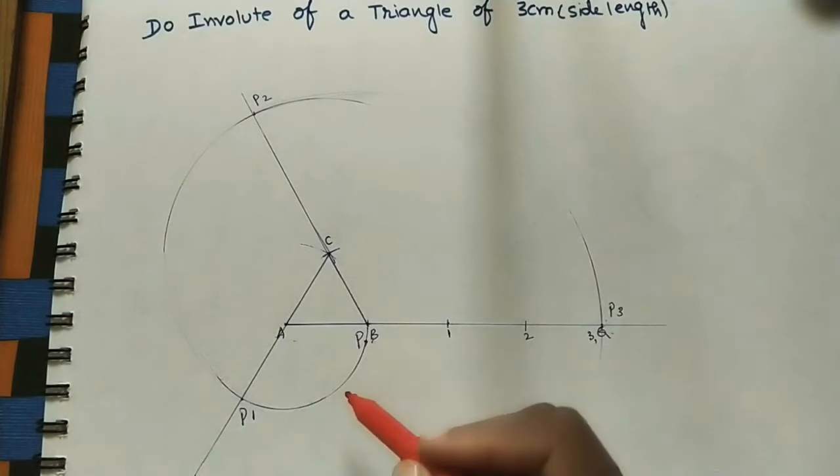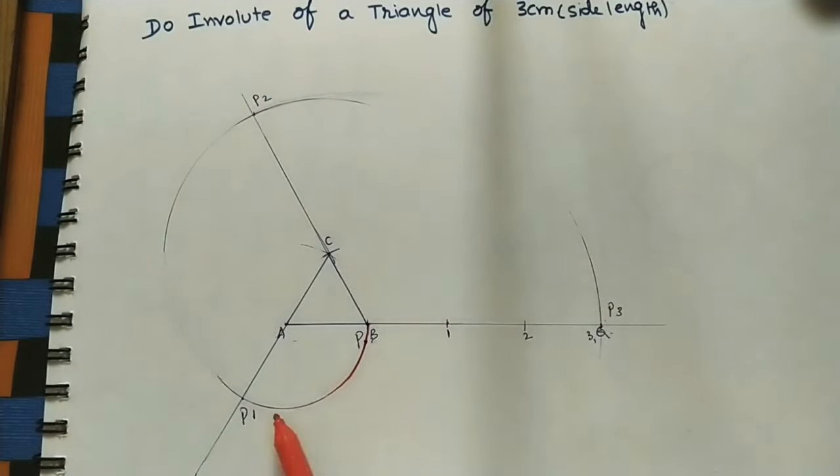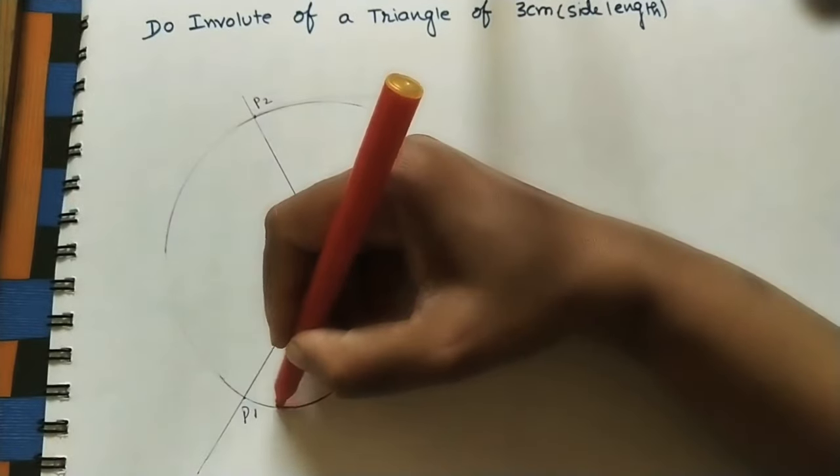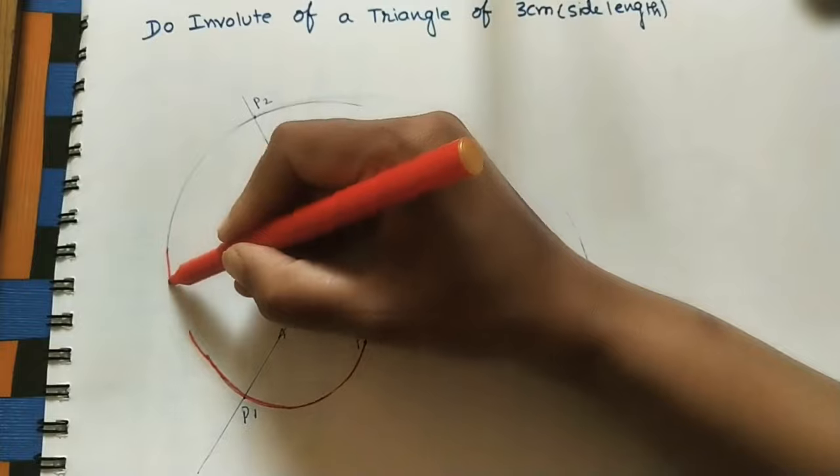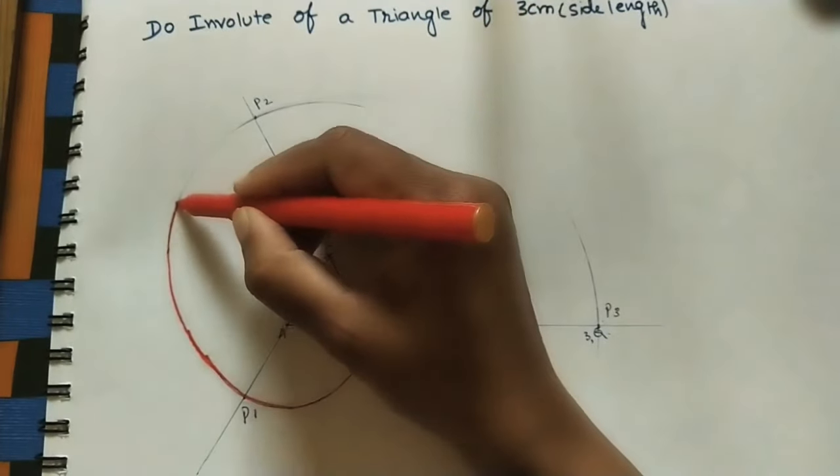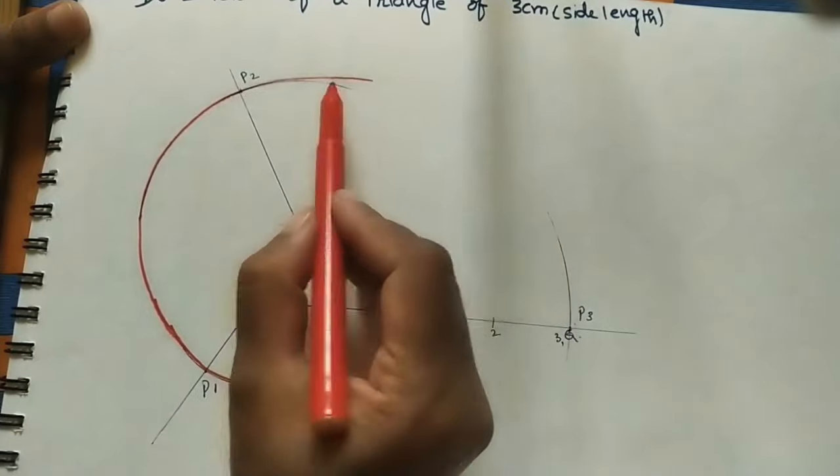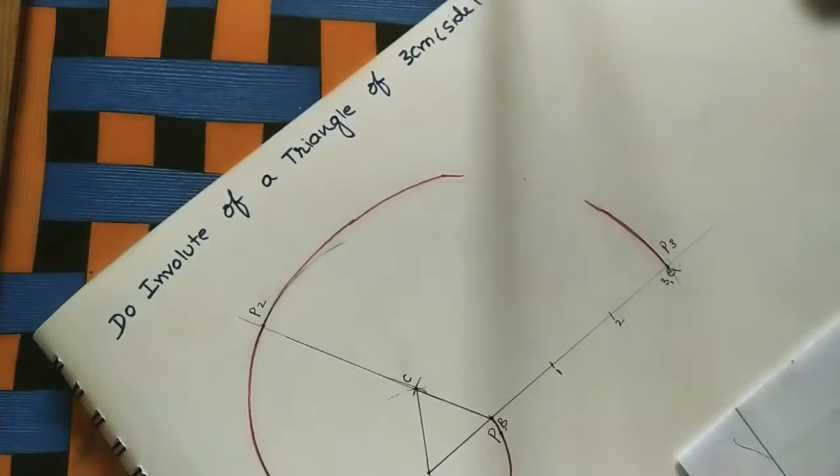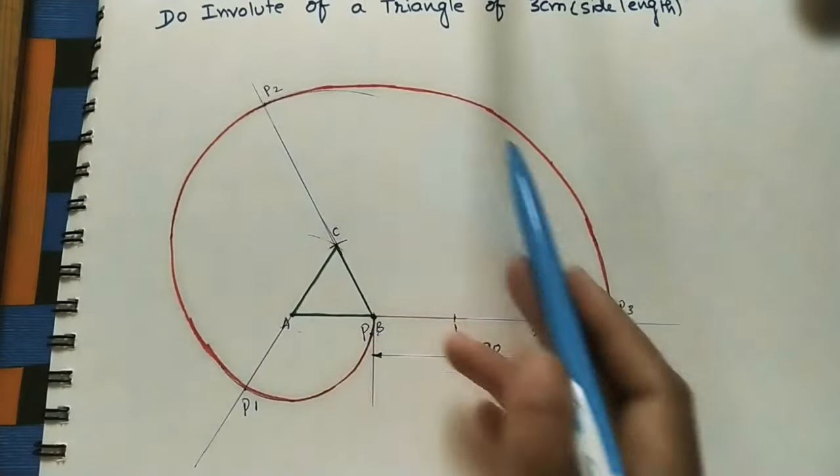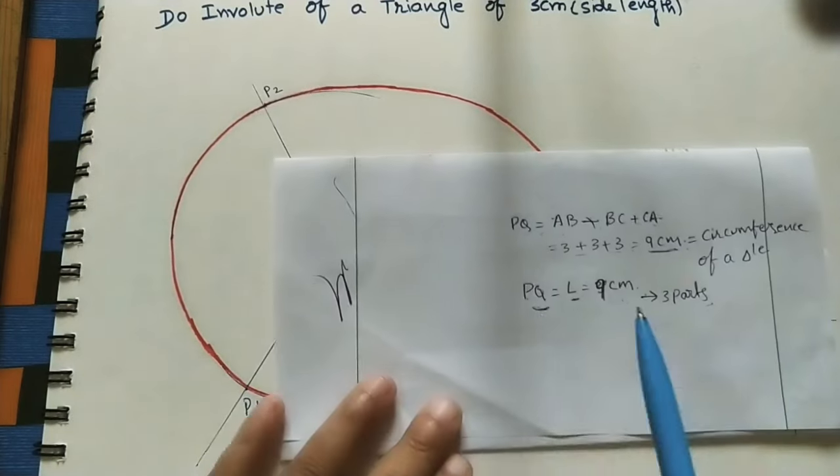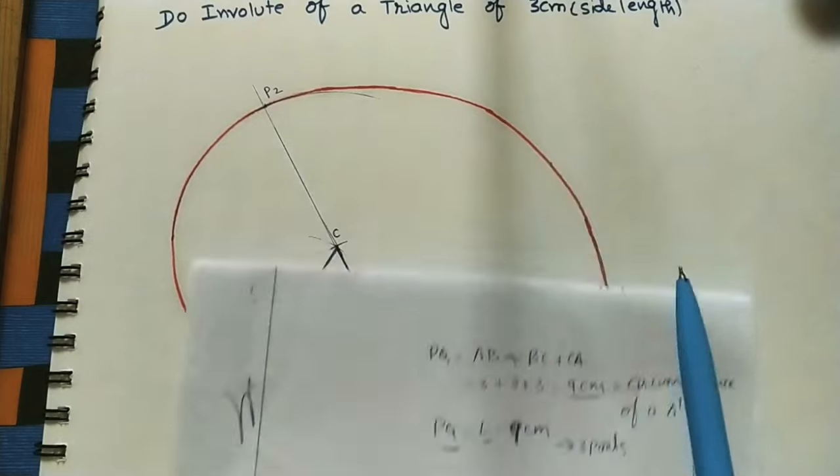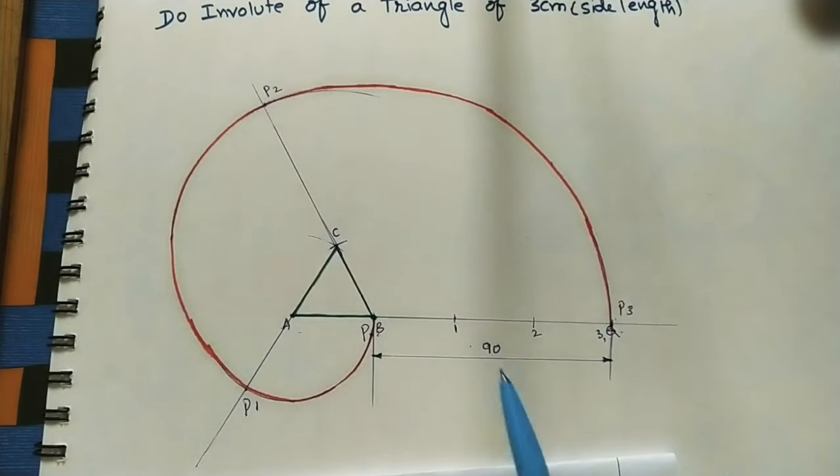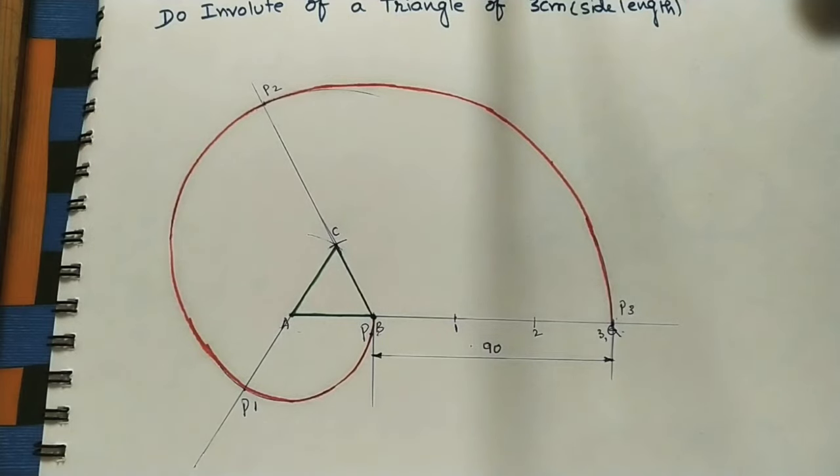Join to Q and we will get an involute. This is an involute for the given triangle. Mark this PQ length - PQ is the circumference, 9 centimeters or 90 millimeters. Other involute video links I will give in the description box. If you like this lecture, please subscribe to my channel, press the like button, and share with your friends. Thank you for watching.